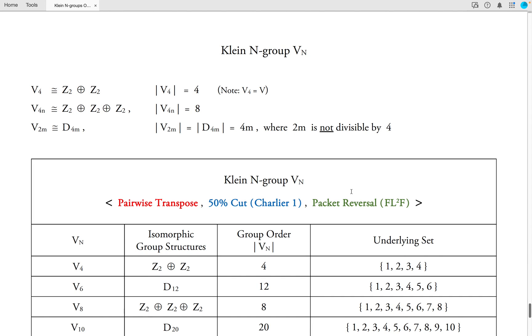Here is a chart that gives the full generalization of the Klein N group, V sub N. So V sub 4, of course, is the traditional Klein 4 group, which is isomorphic to the direct sum of Z2 with itself, and it has order 4. V sub 4N, for any natural number N, is isomorphic to the direct sum of Z2 with Z2 with Z2 with Z2, and has order 8. And V sub 2M is isomorphic to the dihedral group of order 4M, where it's important to note that the assumption here is that 2M is not divisible by 4.